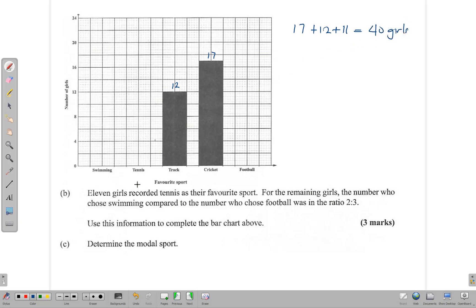For the remaining girls, the number who chose swimming compared to football was in the ratio 2:3. So let's find out how many girls are remaining. We have 75 take away 40, and that gives us 35 girls remaining.